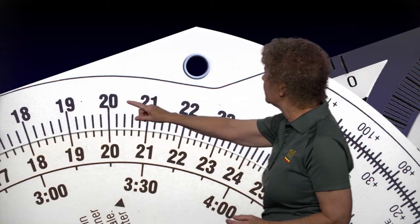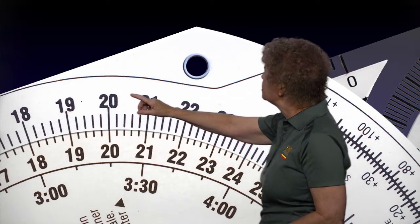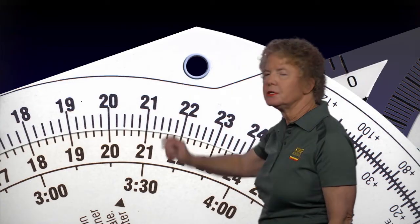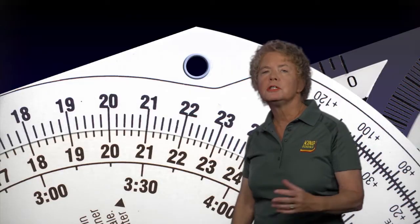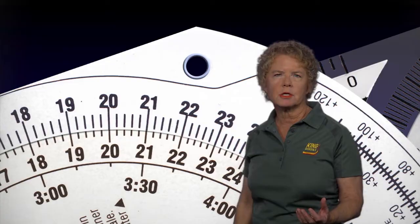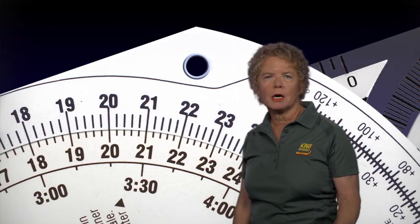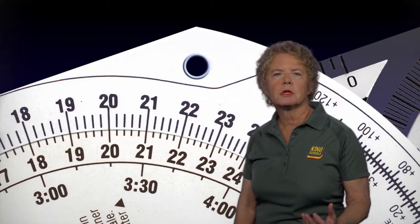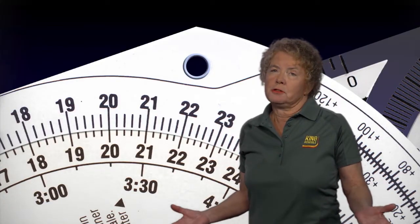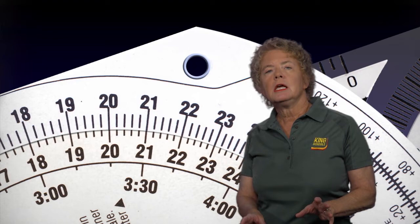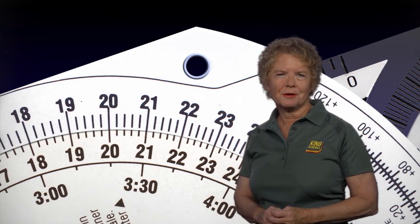What you do find is a 20. So the 20 on the outside scale of the flight computer could stand for 20 miles, but it could also be 2 miles. It could be 200 miles. It could be 2,000 miles. Again, it depends on the kind of problem that you're actually going to be working.